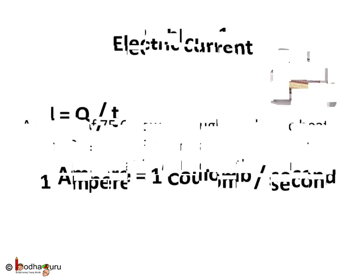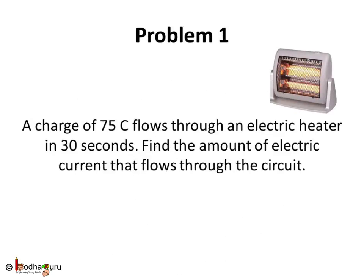Let us take some problems. Say a charge of 75 coulombs flows through an electric heater in 30 seconds. Find out the amount of electric current that flows through the circuit.